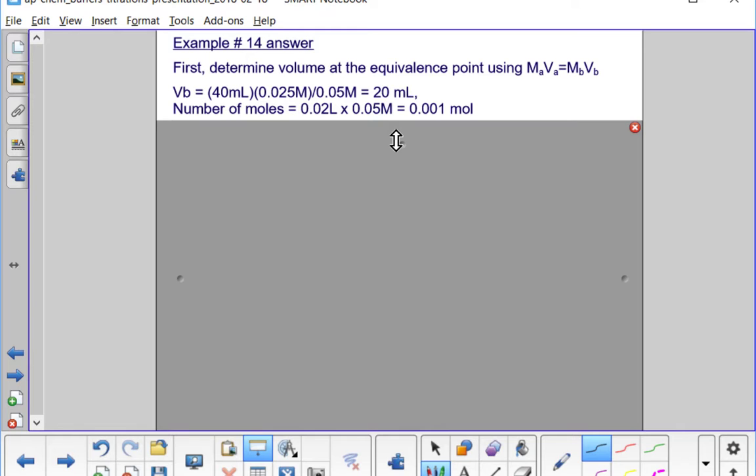Then we can find the number of moles of the base 0.001 moles and the number of moles of acid is in this calculation right here 0.040 times 0.025 moles per liter.